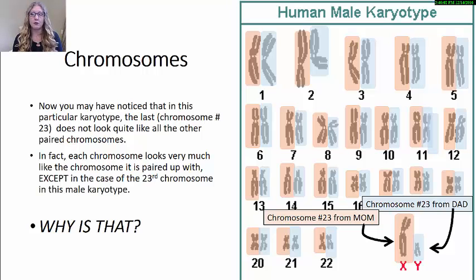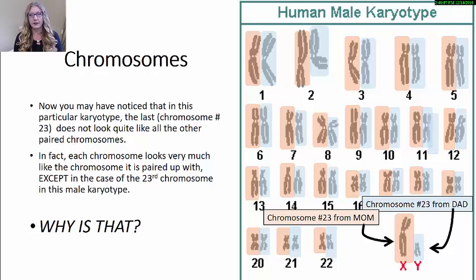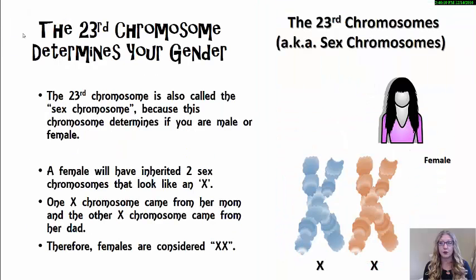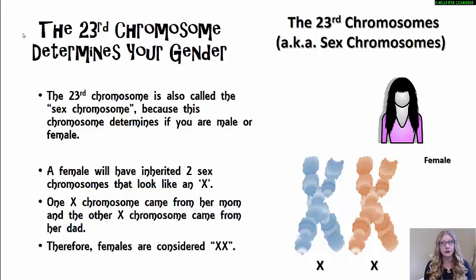The 23rd chromosome has a special function — it does other things too, but one of the things it does is determine what gender you are going to be. For this reason, the 23rd chromosomes are also called sex chromosomes.